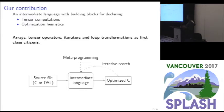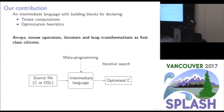The main idea of this language is to declare tensor computations and optimization heuristics. Array temporal operators, iterators, and loop transformations are considered first-class citizens. The intended tool flow is to have a C or DSL source file that translates into the intermediate language, which can also be meta-programmed by an expert, and from this IL we can generate different variants and search for the best version.